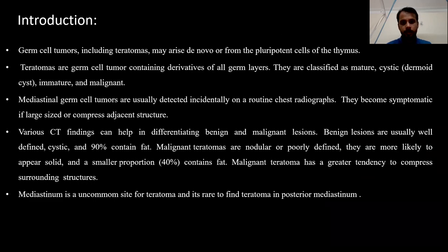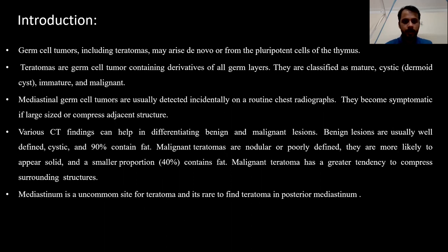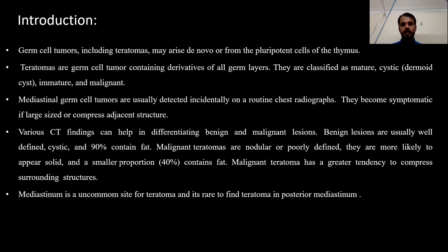Germ-cell tumors include teratomas, dysgerminoma, and other subtypes. Teratomas are germ-cell tumors which contain derivatives of all germ layers. They are classified as mature, cystic, and immature. Mediastinal germ-cell tumors are usually detected on routine chest X-rays, or the patient will be symptomatic where the tumor is large in size, compresses adjacent structures and invades adjacent structures.